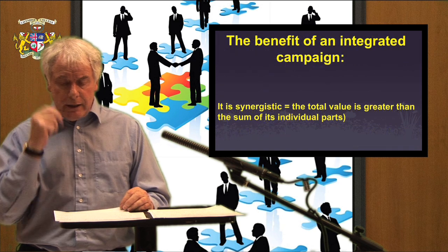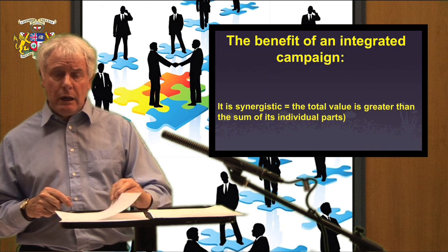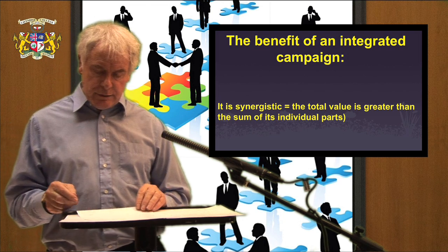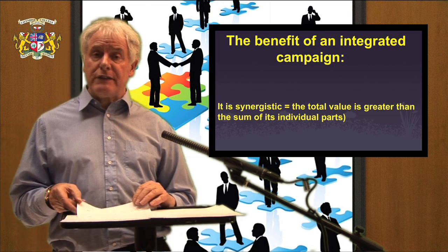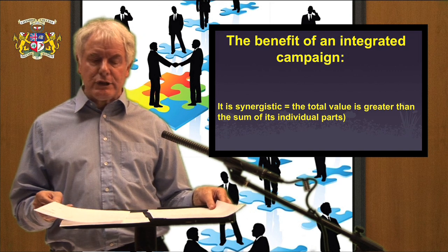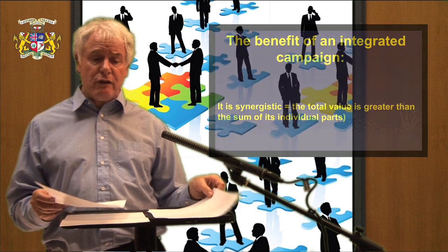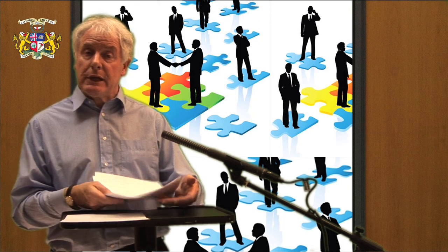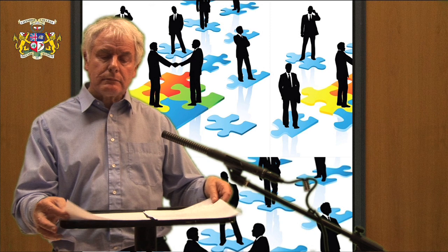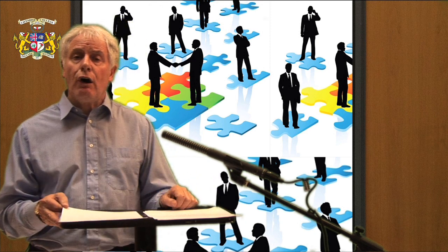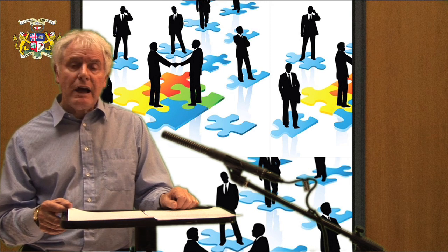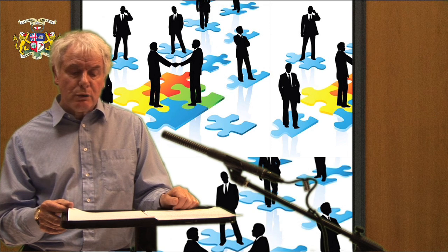Of our £7 million, that will mean spending £6,825,000, leaving £175,000 — 2.5% — as a reserve of budget, should there be a short-term opportunity to do something additionally. The benefit of an integrated campaign is this: it is synergistic. The total value is greater than the sum of its individual parts.